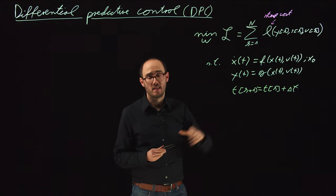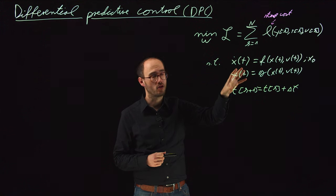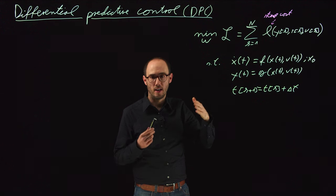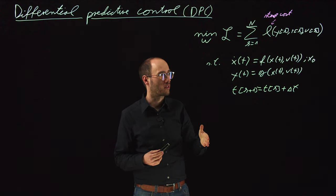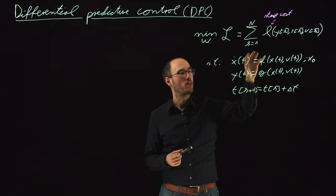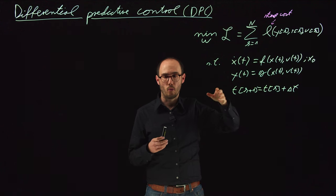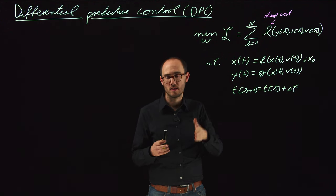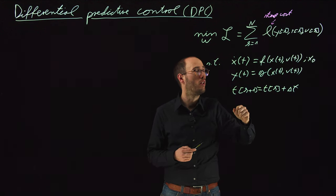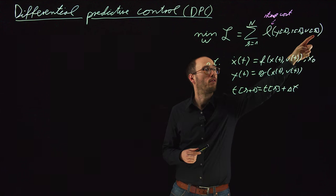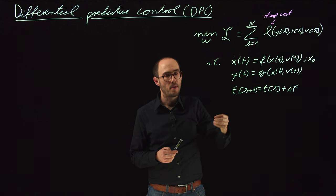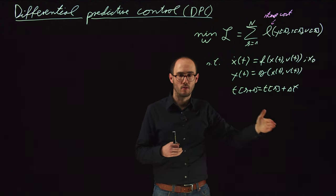Looking at this problem definition, one element is missing, and this is a genuine difference between DPC and model predictive control. In MPC, we take the model, predict into the future with a limited prediction horizon, and then use optimization solvers to find a sequence of u that minimizes the cost function. So MPC is basically having a model and predicting into the future.